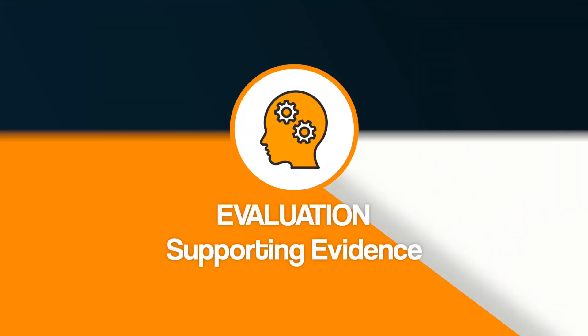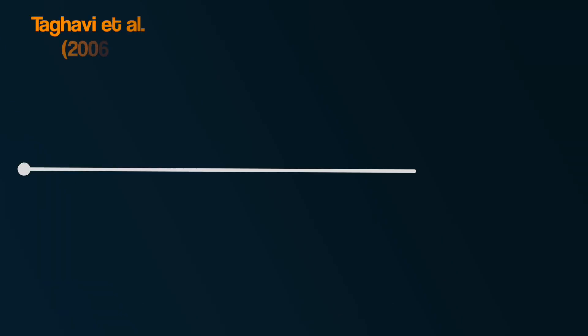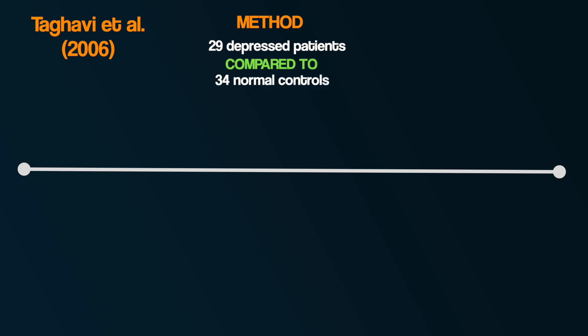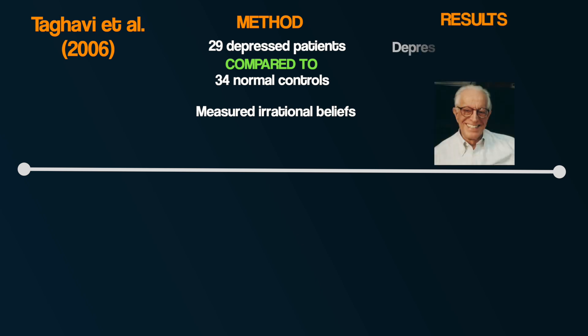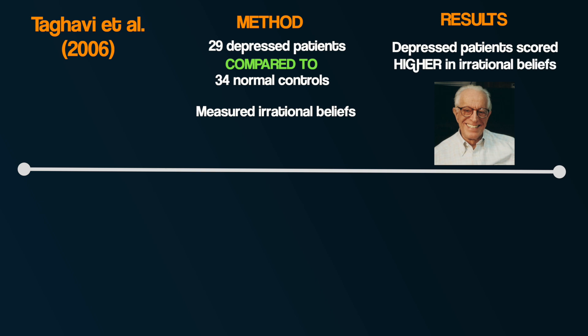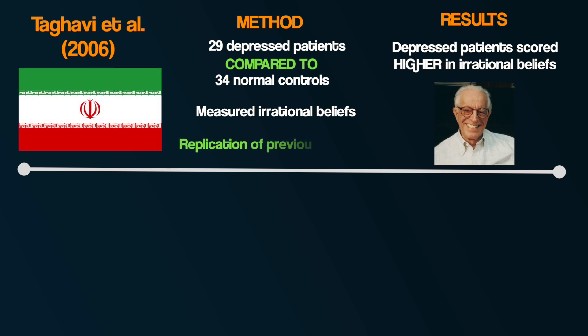Supporting evidence for the cognitive explanations comes from research by Harvey et al. in 2006. 29 clinically depressed people were compared with 34 normal controls on a measurement of irrational beliefs. Consistent with Ellis' ABC model, depressed people scored higher in irrational beliefs than controls. Additionally, this study was conducted in Iran as a replication of previous research from westernised cultures, showing these findings have the potential to apply across cultures.